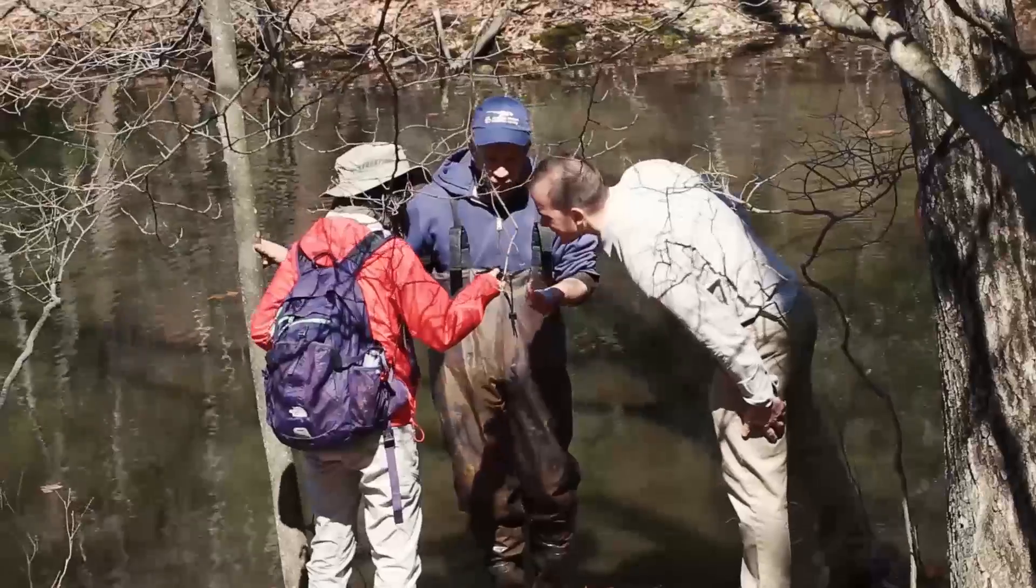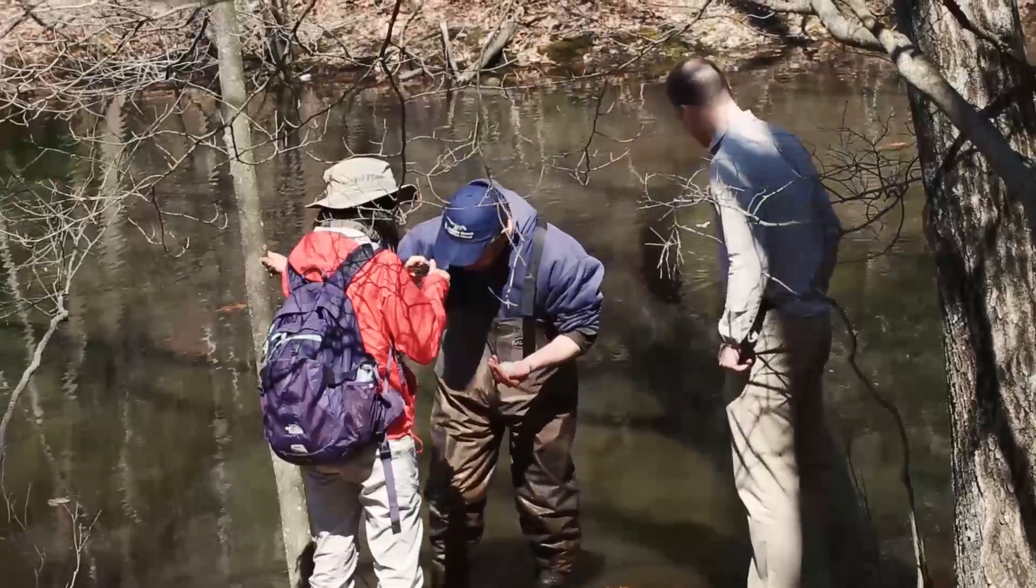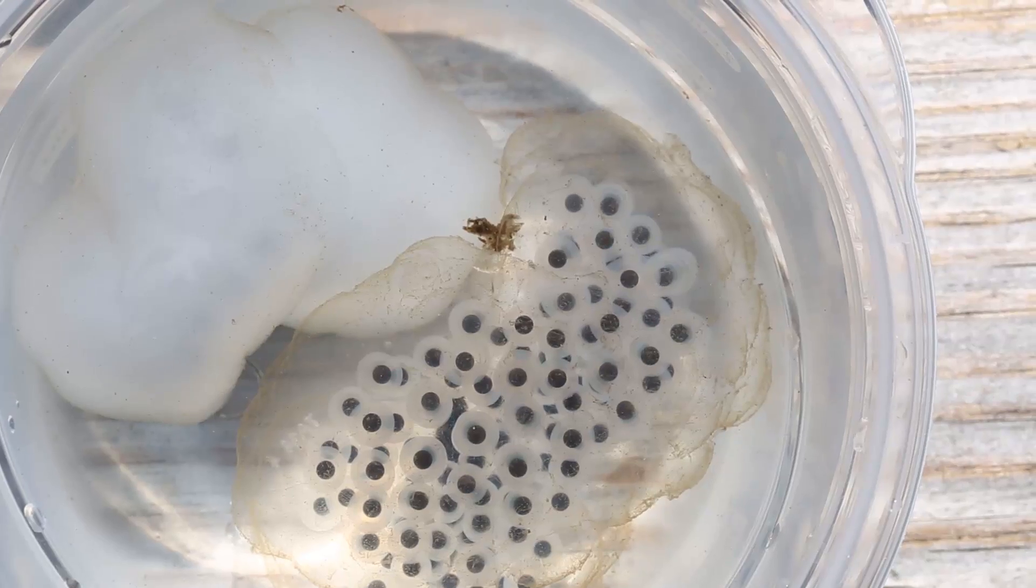Our initial question was, how is it that a beneficial microbe, this algae, is able to get through the big jelly that surrounds the embryos and the individual egg capsules that the embryos live in?